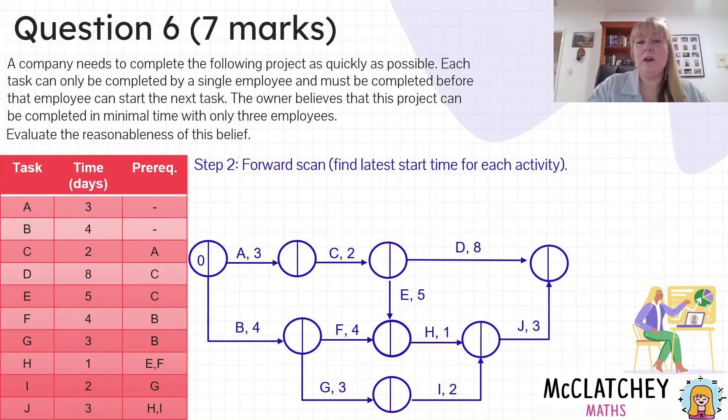We're going to start with our very first vertex which is our open one that everything flows out of, and it's always going to be a zero because everything starts at time zero. Then I'm going to move along different pathways and add the activity time to the previous vertex's information. Activity B takes four days, so zero plus four gives me four. Then I'm going to move along to G. G is going to be four plus three gives me seven days. Activity A is zero plus three gives me three. Move along with activity C, three plus two gives me five.